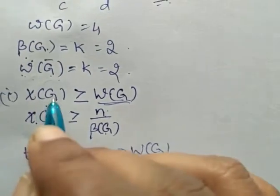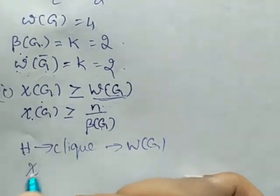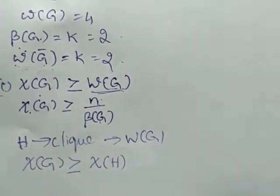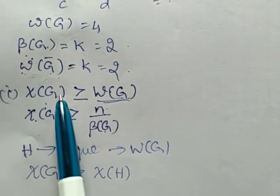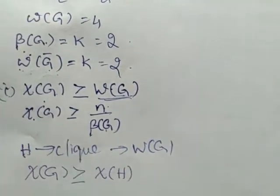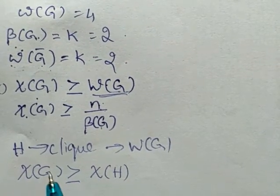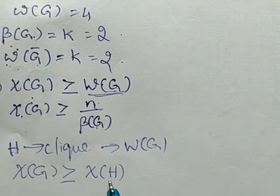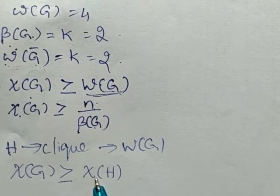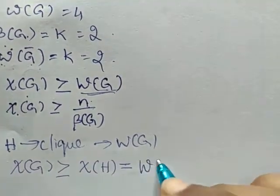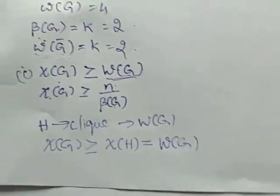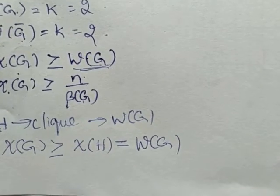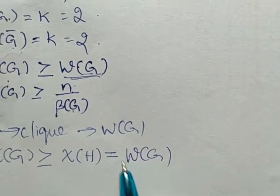Since H is a subgraph of G, it is obvious that χ(G) ≥ χ(H). G is a graph and H is a subgraph of G, therefore the number of colors required to color G is greater than or equal to the number of colors required to color H. We have already seen that χ(H) equals the clique number, because H is a complete graph — for a complete graph the number of colors required is the same as the number of vertices, which is ω(G).